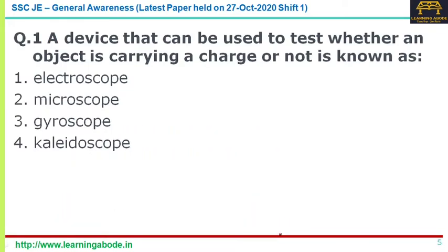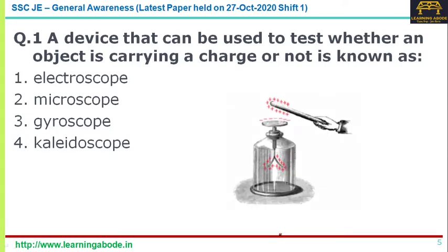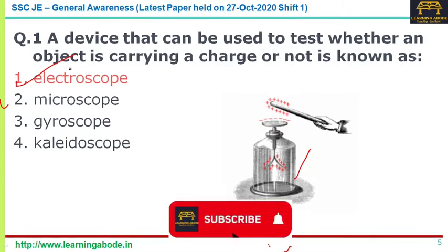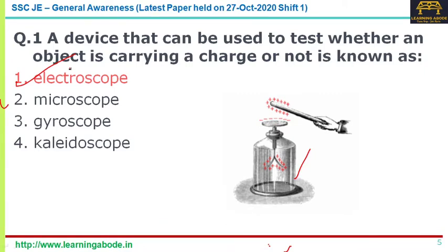The first question: a device that can be used to test whether an object is carrying a charge or not. Option two, microscope, is an instrument used to observe small objects, even cells. Gyroscope is a device used for measuring or maintaining orientation and angular velocity. Kaleidoscope is an optical device consisting of mirrors that reflect images of bits of colored glass in a symmetrical geometrical design. The answer for the first question is electroscope.